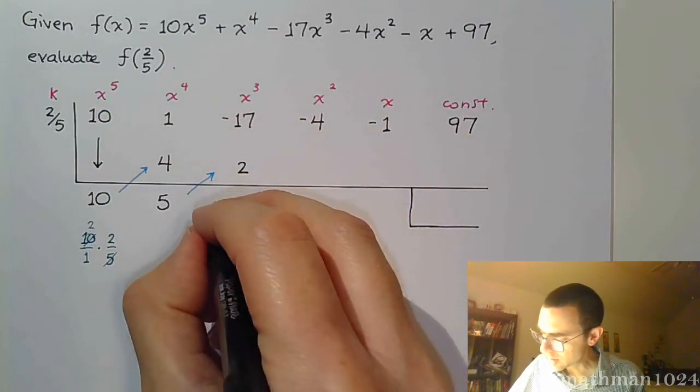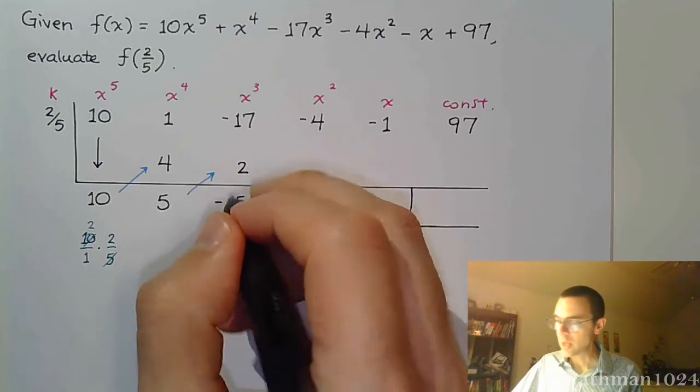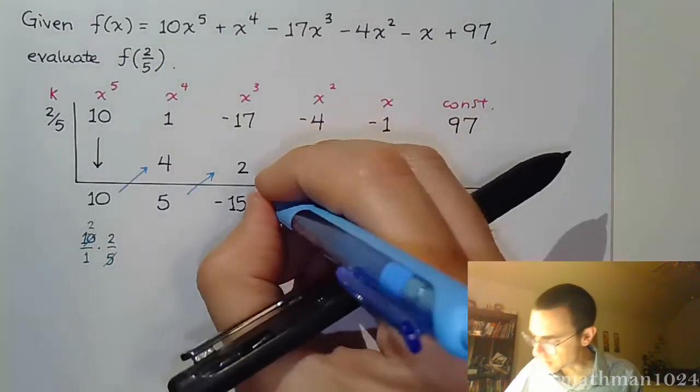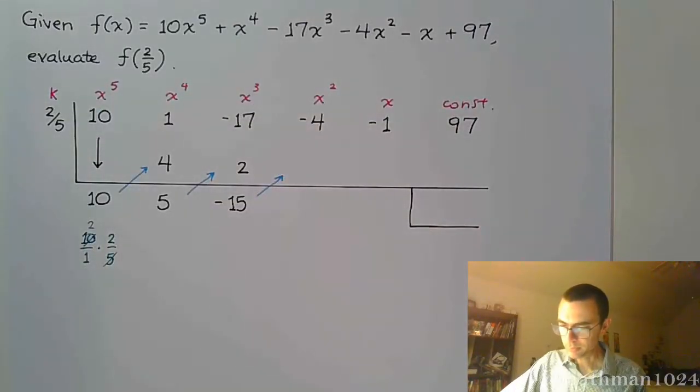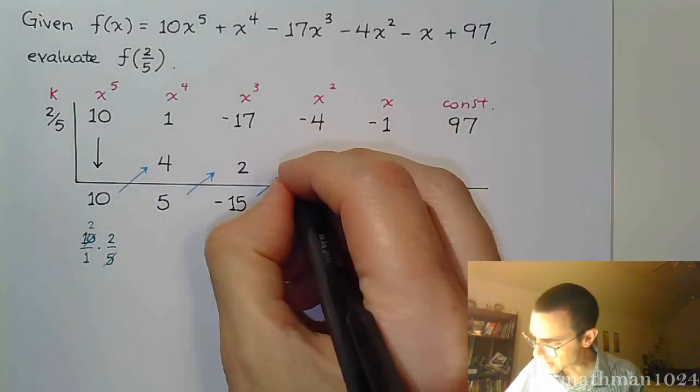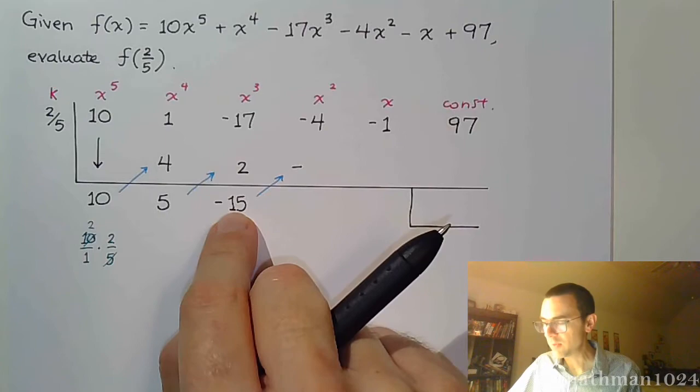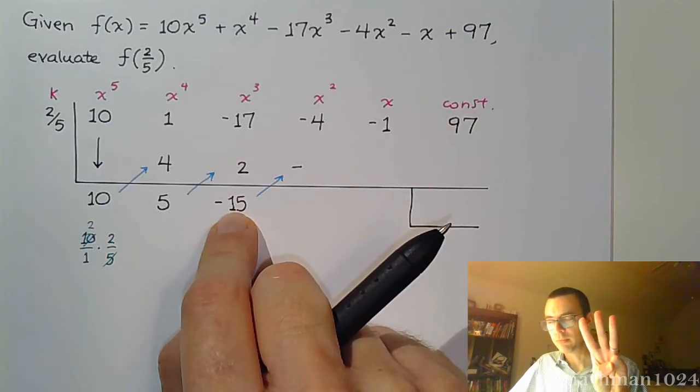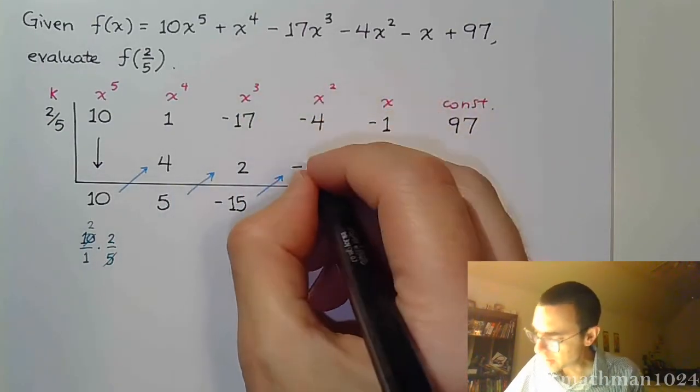Combine these, it's negative 15. So positive times negative, when I do this next product, positive times negative is negative. 15 divided by 5 is 3. 3 times 2, the numerator, is 6.